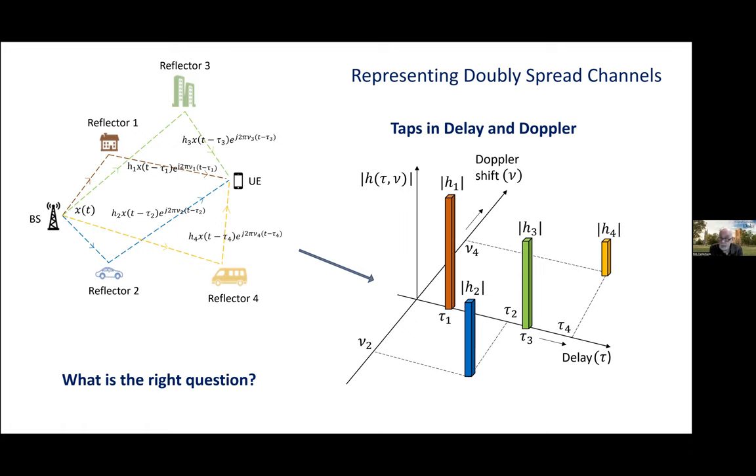So we're starting with a time signal, x of t. We time delay by path delay tau, frequency shift by Doppler shift nu, and weight by some time-independent amplitude, h of tau nu. In the slide, the taps represent reflectors and the height of the tap represents power.